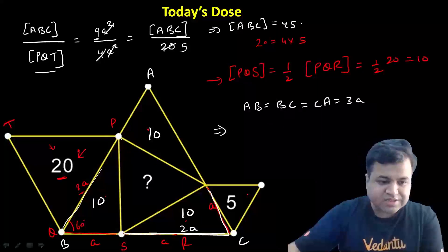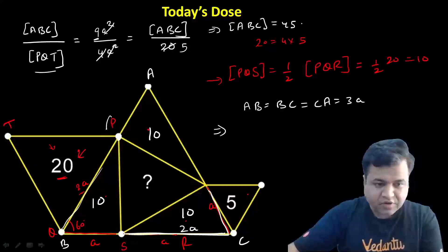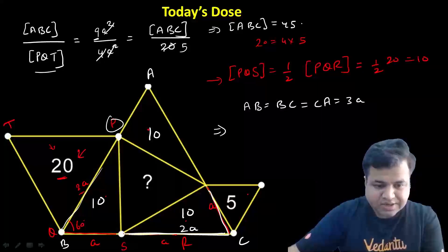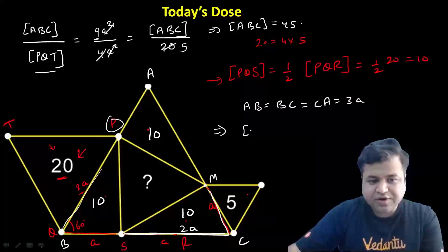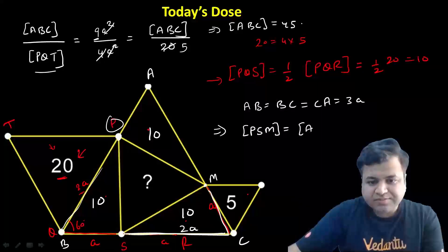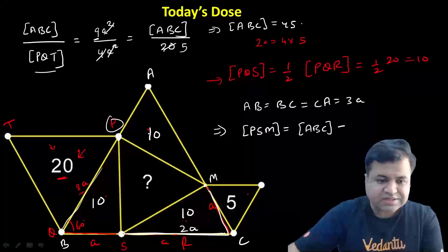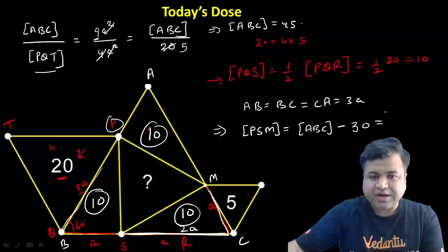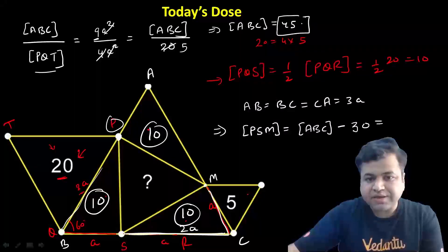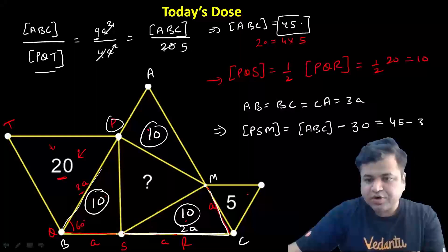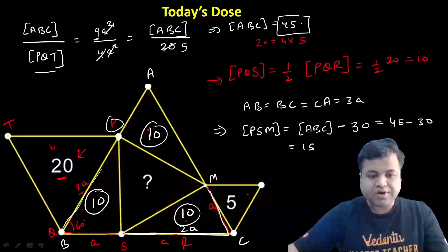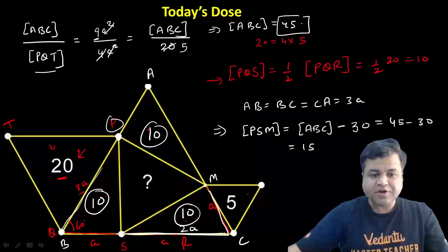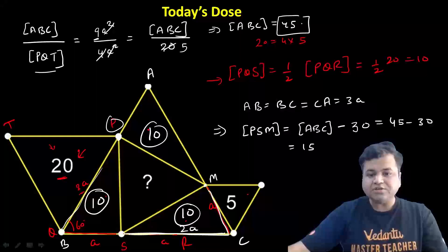So area of triangle ABC is 45. Now, the area of the central triangle DEF equals area of ABC minus the three corner triangles. Each corner triangle has area 10, so we subtract 10 plus 10 plus 10, which is 30. Therefore, area of triangle DEF equals 45 minus 30, which is 15 square units.